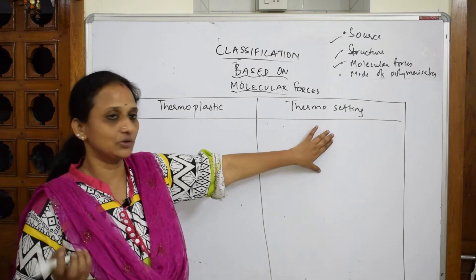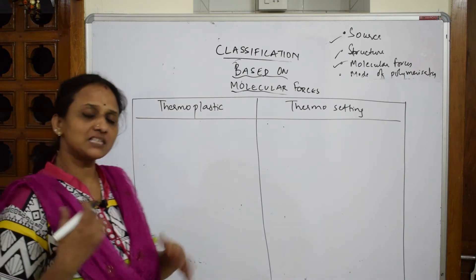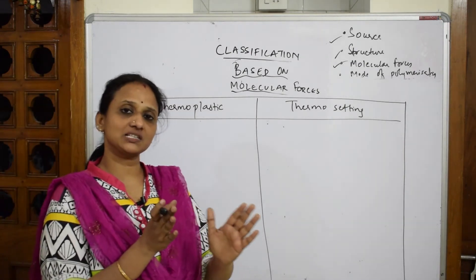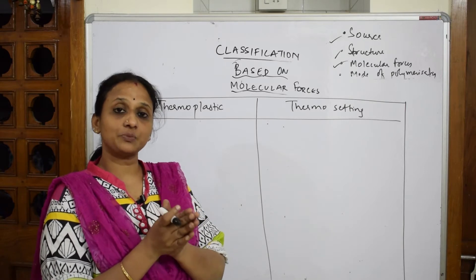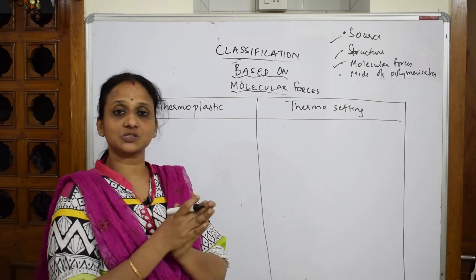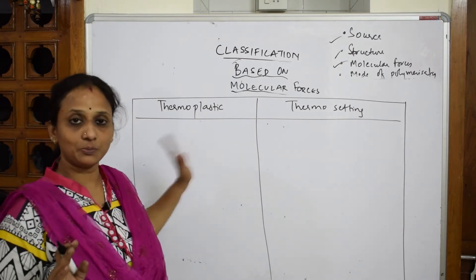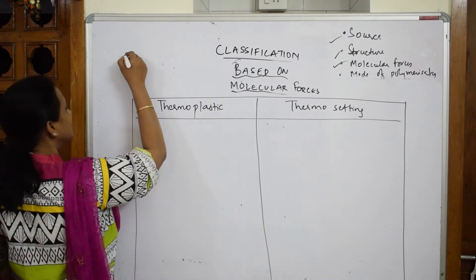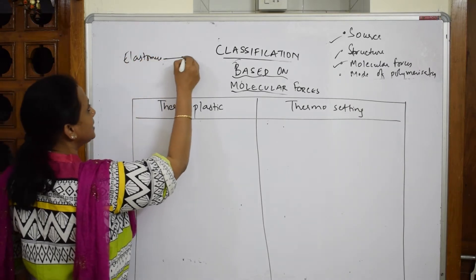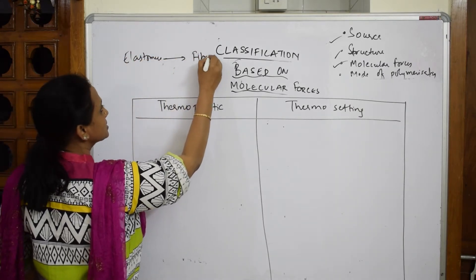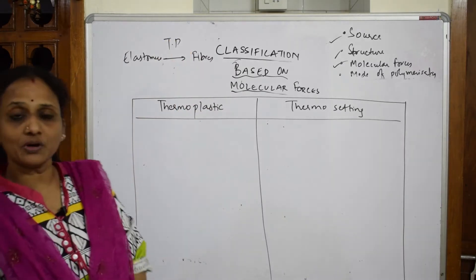Thermoplastic polymers have properties in between elastomers and fibers — they are an intermediate class. If asked in one mark, a polymer which has properties in between elastomers and fibers is a thermoplastic polymer.